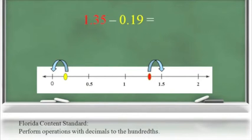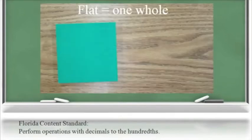Using benchmarks of zero, five tenths or a half, and the next whole, students could estimate a reasonable answer by saying that nineteen hundredths is closest to the benchmark of zero, and one and thirty-five hundredths is closest to the benchmark of one and five tenths. We would get a reasonable estimate of about one and five tenths meters.